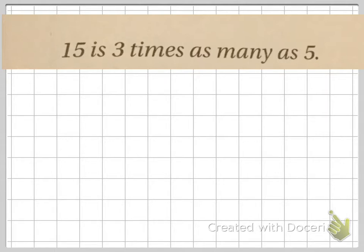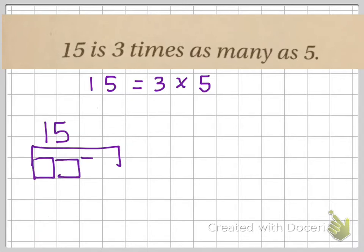I can write this as an equation. 15 equals 3 times 5. Next, I can show this as two pictures. I can write 15 is 3 times as many as 5.